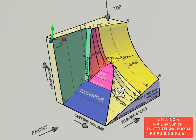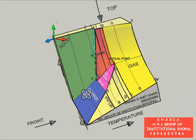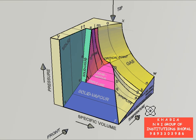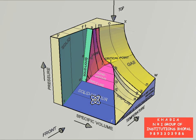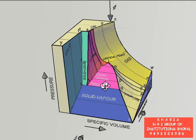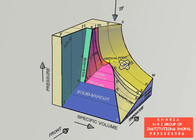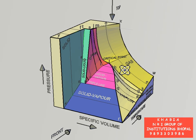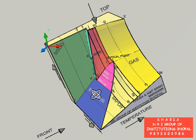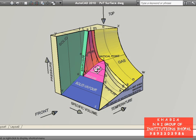This is the 3D model of the PVT surface for a pure substance that contracts on solidifying. Pressure, specific volume, and temperature are plotted on three mutually perpendicular axes. This whole surface is the PVT surface of the pure substance that contracts on freezing. All possible equilibrium states of the pure substance are represented by a point on this PVT surface. Let me now start the explanation by describing the different surfaces involved in making this model.